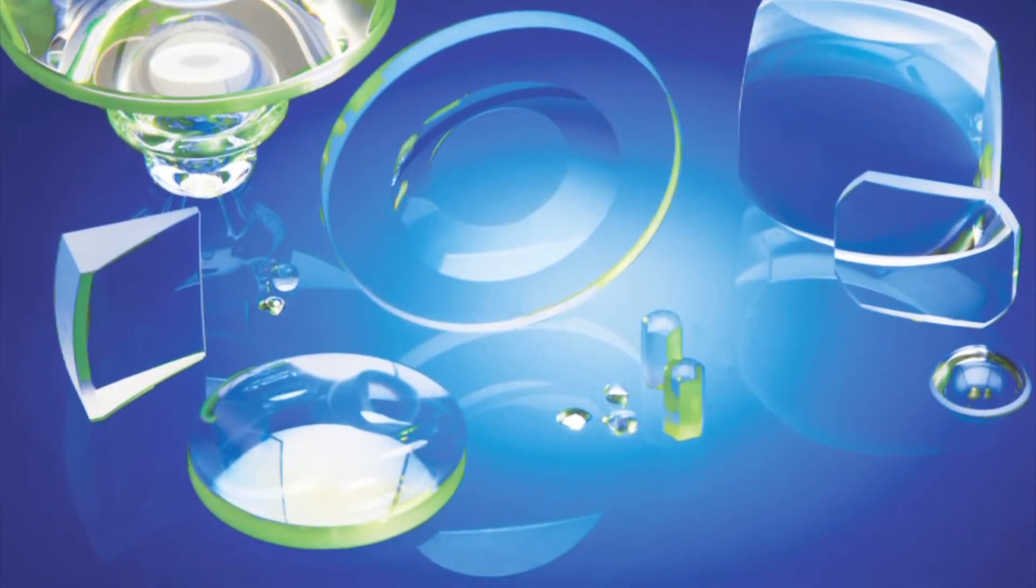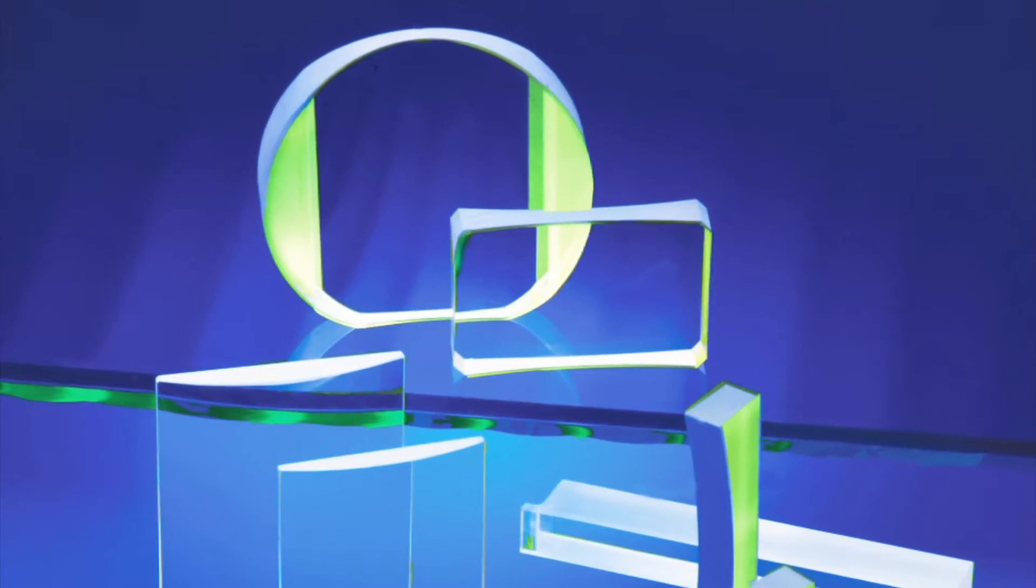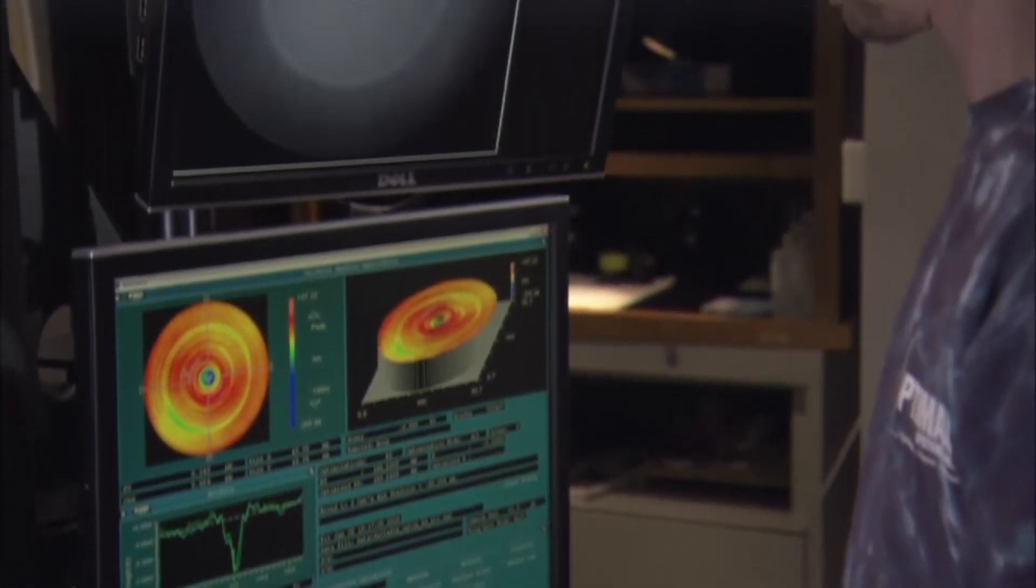When we fabricate these shapes, the ultimate accuracy at the end we're measuring with wavelengths of light, so submicron surface accuracies. When we're creating these parts and machines that we're running on Mastercam, our goal is to make those parts micron good.